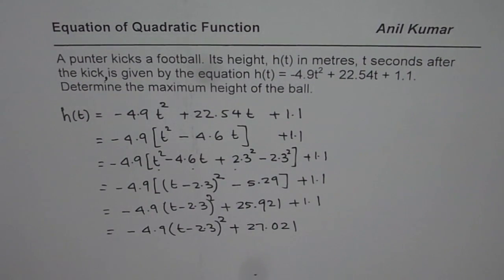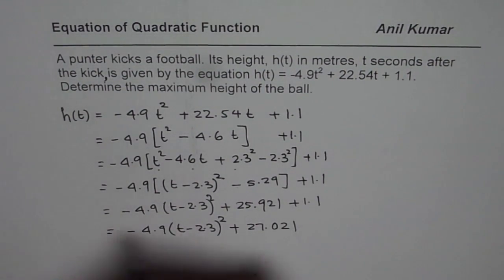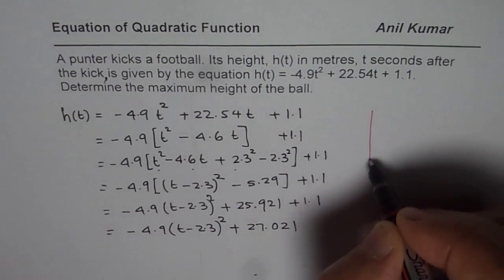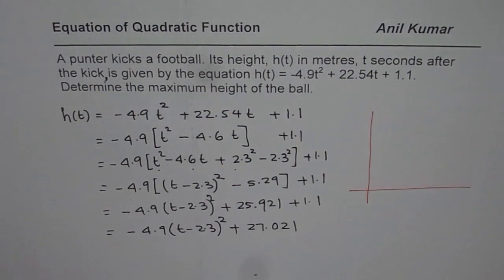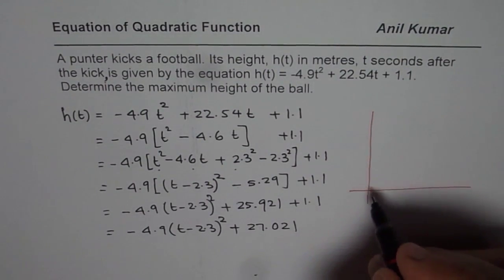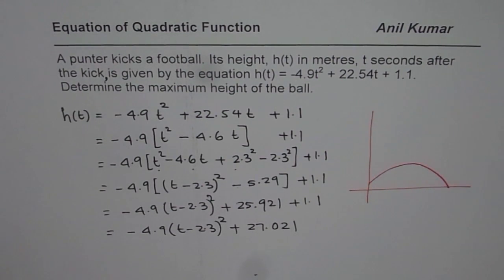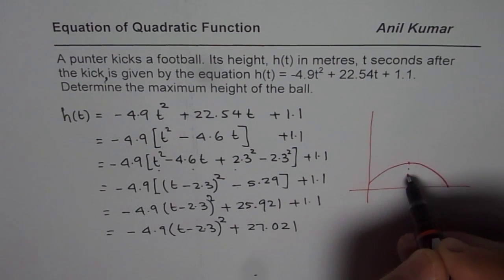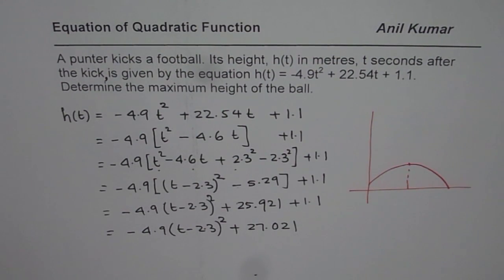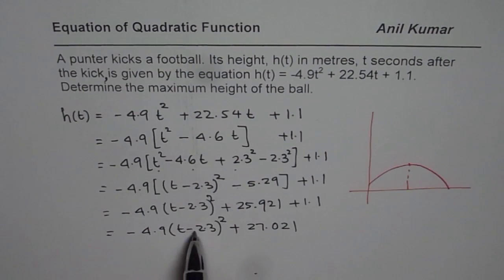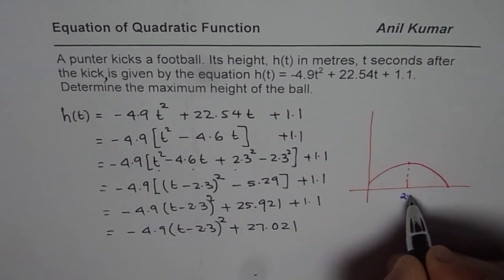Since it is a parabola, with minus here, that means we are talking about the ball, which is kind of, let me just sketch it here. Going like this. Got it? Now, the maximum height will be at, this is the vertex, 2.3 is the time actually.